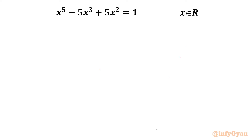Welcome to InfiGyan. In this video we will be solving one very interesting quintic equation: x⁵ minus 5x³ plus 5x² equals 1, using the synthetic division method, where x belongs to real numbers. Let us get started by writing all the terms to the LHS, so we write x⁵ minus 5x³ plus 5x² minus 1 equals 0.